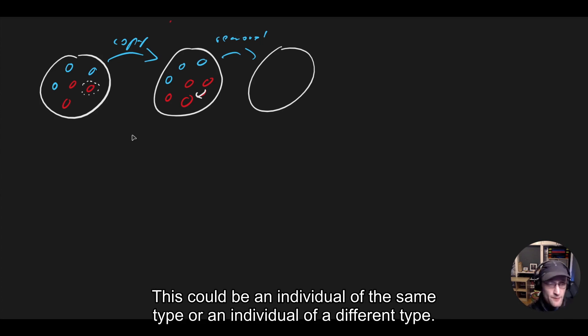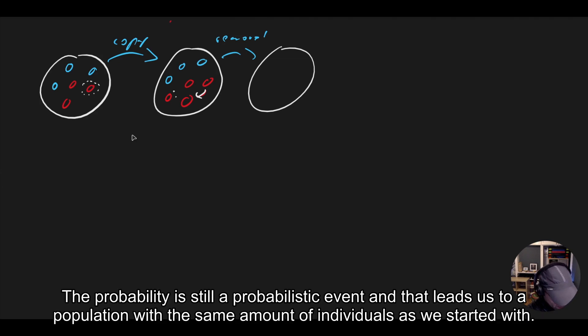This could be an individual of the same type or an individual of a different type. The probability is still a probabilistic event, and that leads us to a population with the same amount of individuals as we started with.